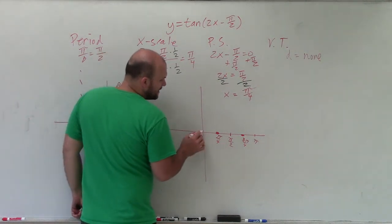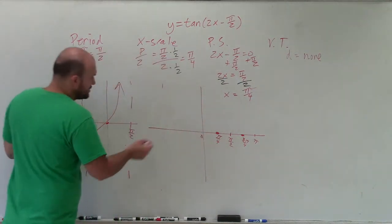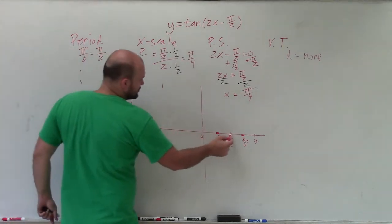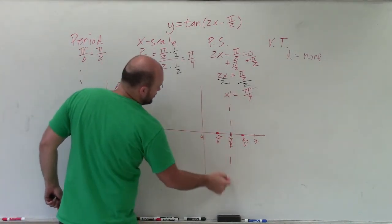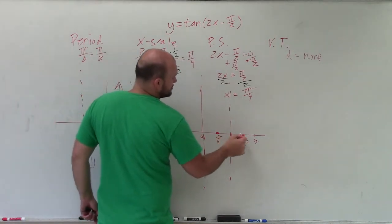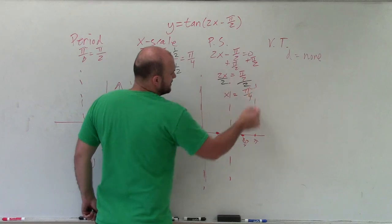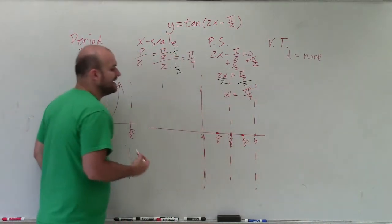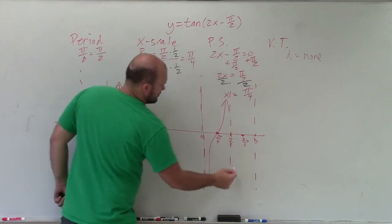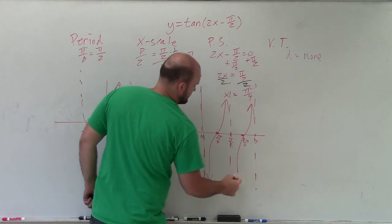Therefore, if I go from, now again, we start here. So to the right, x scale is an asymptote. To the left is an asymptote. So to the right is an asymptote. To the left is an asymptote. Then I go to x scale. To the left is an asymptote. To the right is an asymptote. Now, again, I just follow along the same pattern.